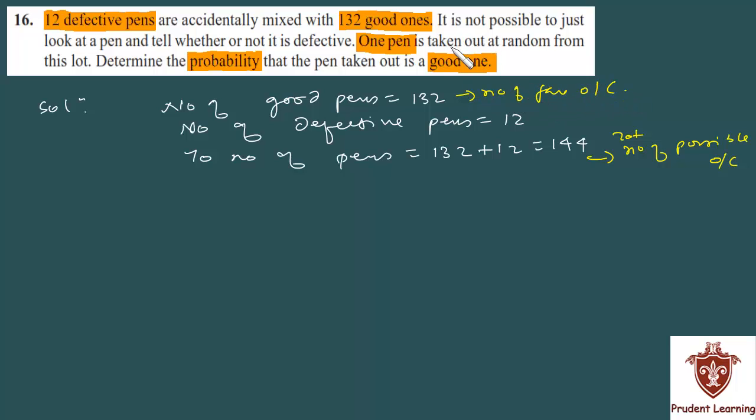I'm not going to write a lot of text, just in short. You know that probability is number of favorable outcomes over total number of possible outcomes. So for a good pen, number of favorable outcomes is 132, over total number of pens, 144. So 132 upon 144. If you solve this...